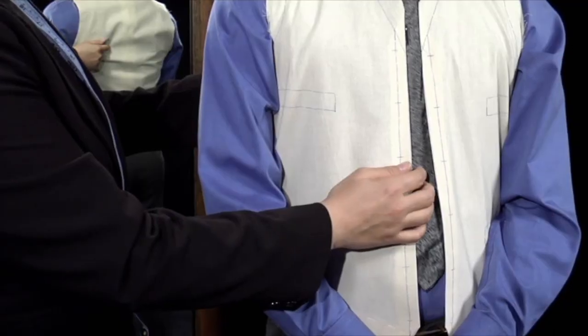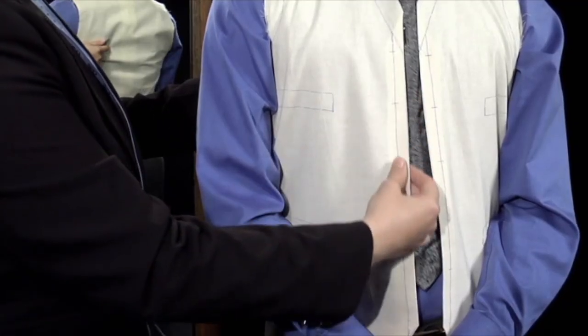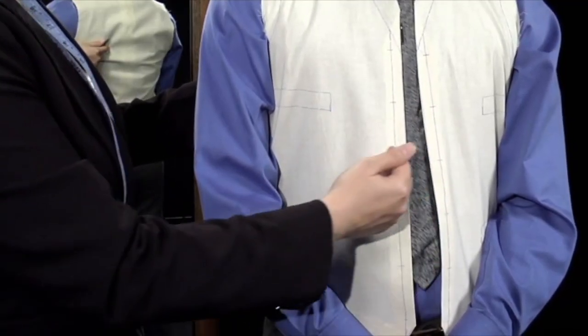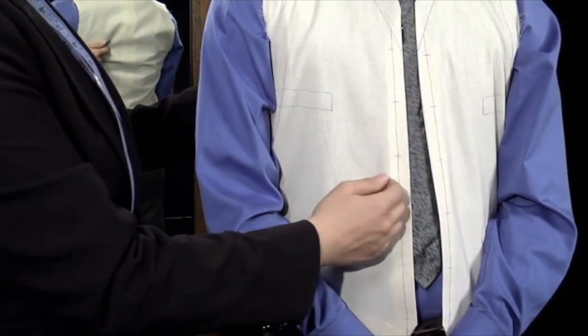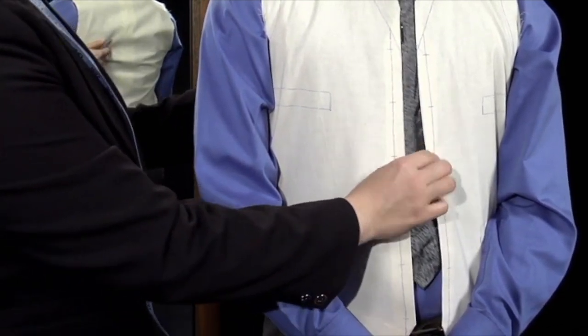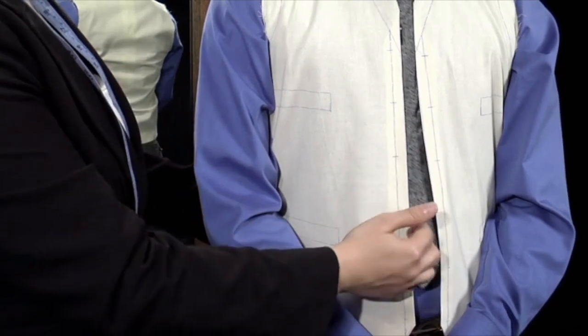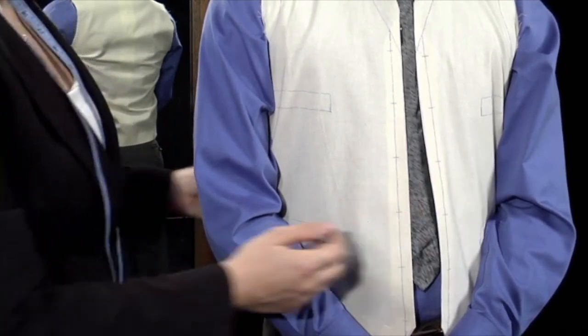As you can see, this vest already has a fit issue in that we can't close the center front of the garment. One of the most important things is to keep the center front and center back lines where they belong. In order to get the front to close, we'll need to open the side seams.